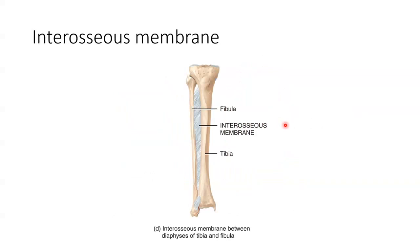An interosseous membrane is a large sheet of dense irregular connective tissue which binds neighboring long bones and permits very small amounts of movement. There are two main interosseous membrane joints in the human body: one occurs between the radius and the ulna, which are the two bones in our lower arm, and the other occurs between the tibia and the fibula in the lower leg. So this is our interosseous membrane here.